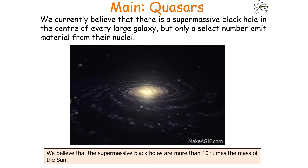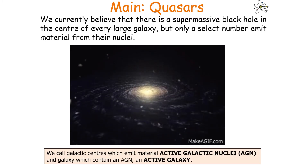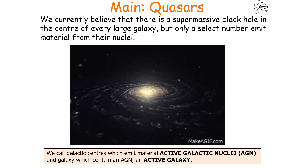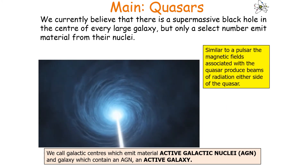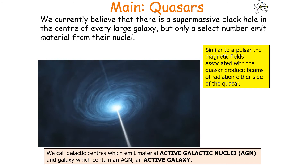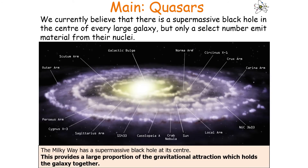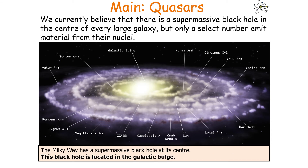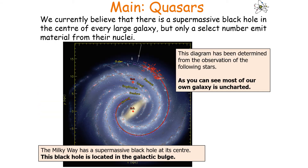We currently believe there is a supermassive black hole in the centre of every large galaxy, anchoring the stars through gravitational attraction, but only a selected number of galaxies emit material from their centre. We believe these supermassive black holes are about 10 to the 6 times the mass of the sun. We call galactic centres which emit material active galactic nuclei (AGN), and the galaxy containing an AGN is called an active galaxy. Similar to a pulsar, the magnetic fields associated with quasars can produce beams of radiation either side of the quasar. Our Milky Way galaxy has a supermassive black hole in its centre — in the galactic bulge — providing a large proportion of the gravitational attraction which holds the galaxy together.